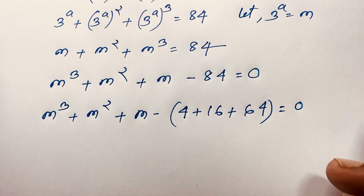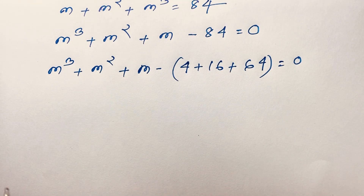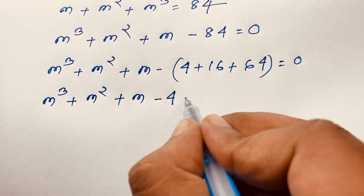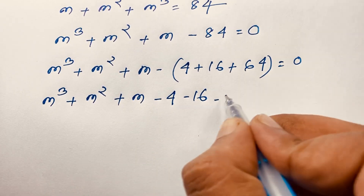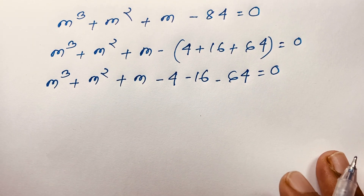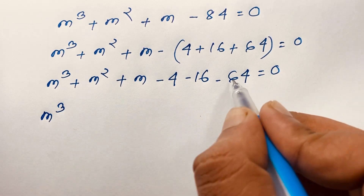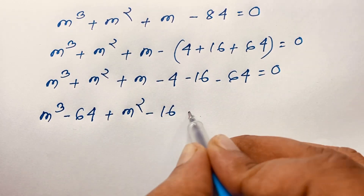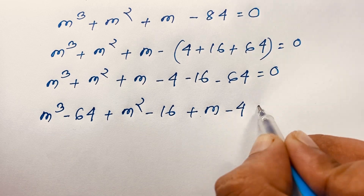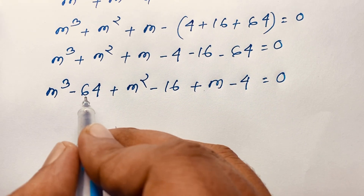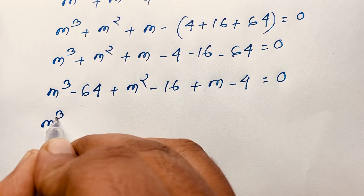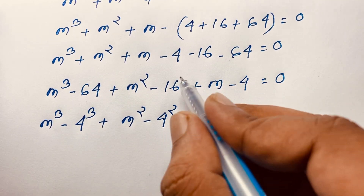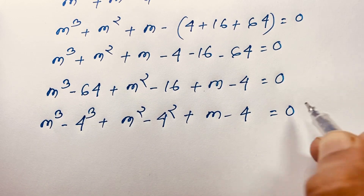We rewrite the equation as m³ − 64 plus m² − 16 plus m − 4 equals 0, recognizing that 64 = 4³ and 16 = 4². So we have m³ − 4³ plus m² − 4² plus m − 4 equals 0.